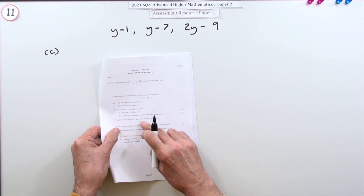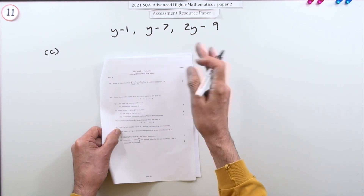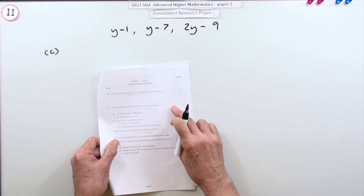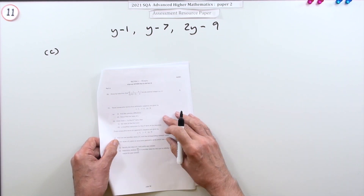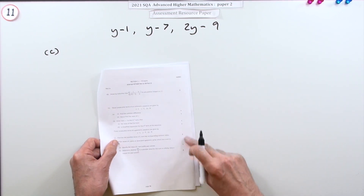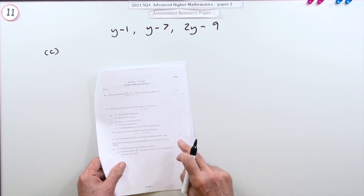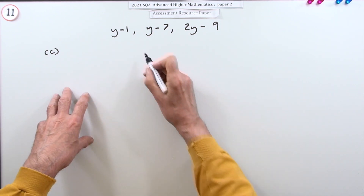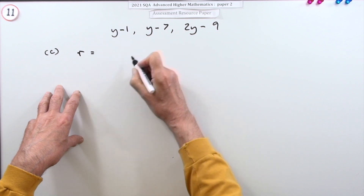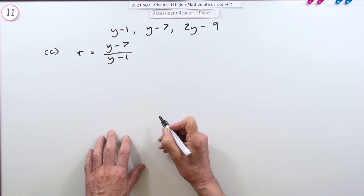Now part c: three consecutive terms of a geometric sequence are given — exactly the same terms as before but now using y instead of x. If they form consecutive terms of a geometric sequence, there's a common ratio between them. The ratio is given by dividing consecutive terms: (y minus 7) divided by (y minus 1) gives the ratio, and so does (2y minus 9) divided by (y minus 7).